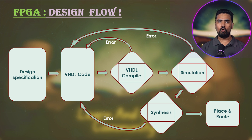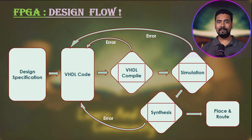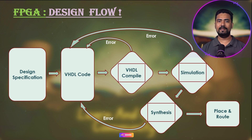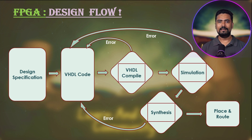Once we have tested all individual blocks and we are confident that they are all working as expected, it is time to bring everything together. This is where we create our top-level FPGA design — the final assembly. To ensure the entire system functions as intended, we write a comprehensive test bench that simulates the entire FPGA design as a whole, allowing us to identify and fix any bugs. Once confident in the simulation, we proceed with synthesis, where the HDL code gets translated into the format the FPGA can understand.